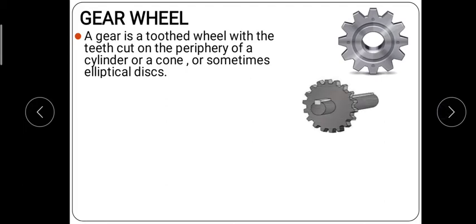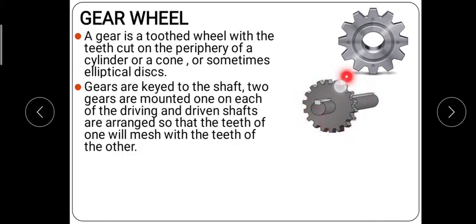The gear is keyed to a shaft — you can see a gray-colored key — and placed on the shaft. Gears are keyed to the shaft, and two gears are mounted on each of the driving and driven shafts. The driving shaft is the one which is driving, and the driven shaft is the one which is driven by the driving shaft. These two shafts are connected by gears so that the gear teeth of one mesh with the other, transmitting power from the driving shaft to the driven shaft.